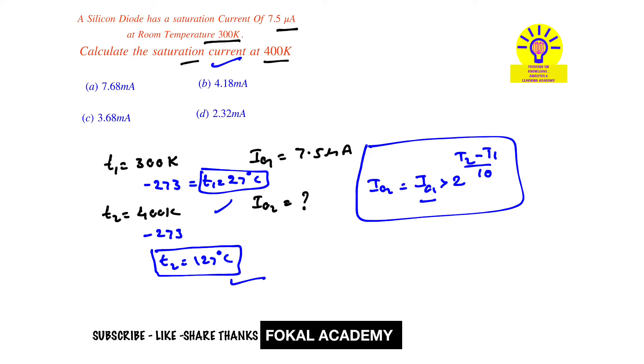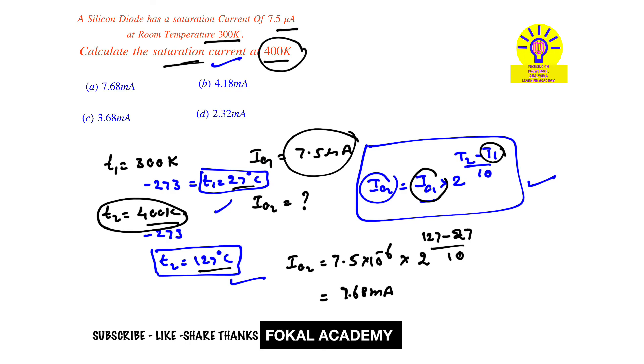Now substitute all the data in this equation. I_O2 equals I_O1, which is 7.5 milliamperes, that is 7.5 times 10 to the power minus 6, times 2 to the power of T2, which is 127, minus T1, which is 27, divided by 10. By simplifying this, we get 7.68 milliamperes saturation current at 400 Kelvin or at 127 degrees Centigrade.